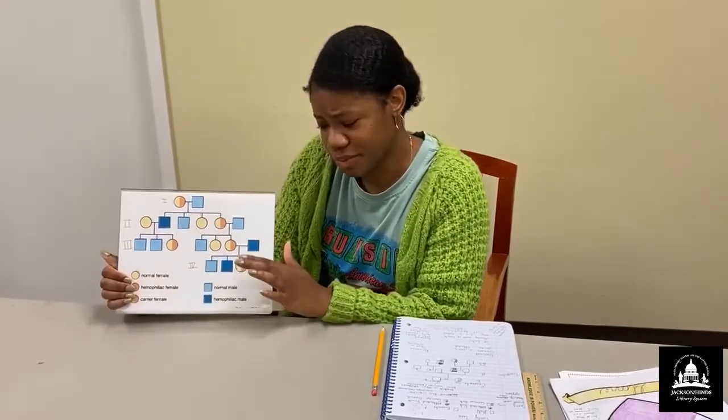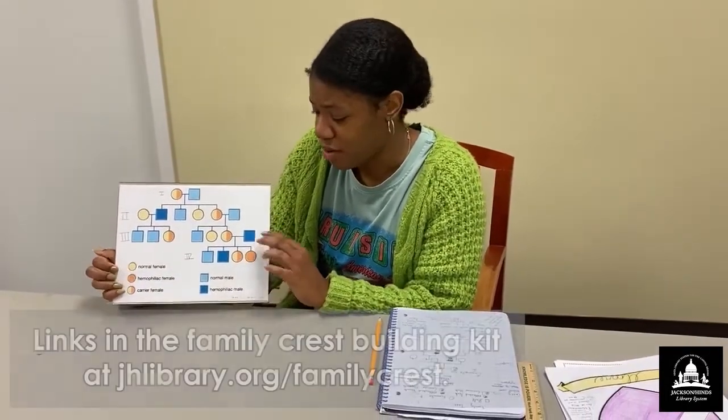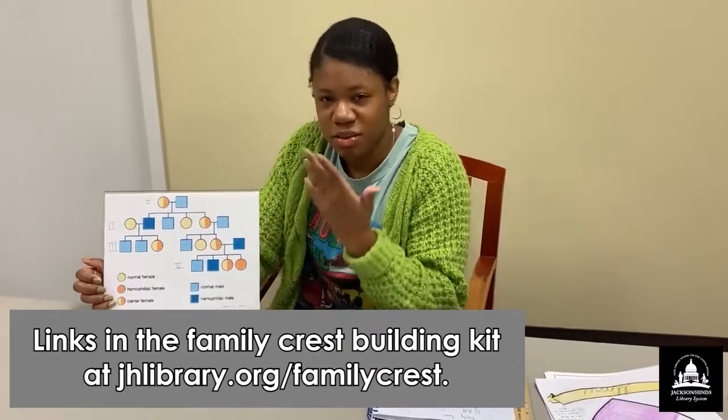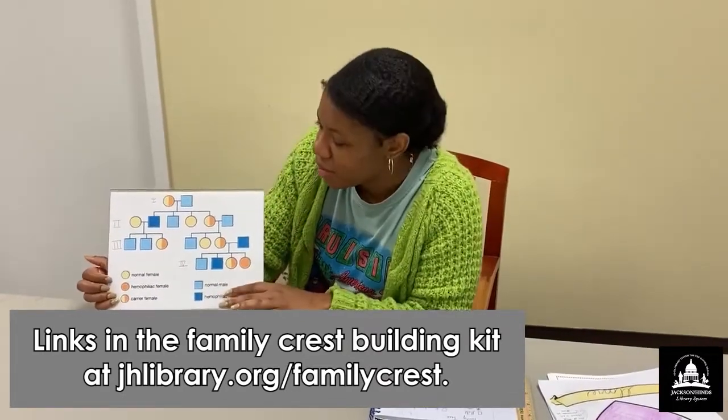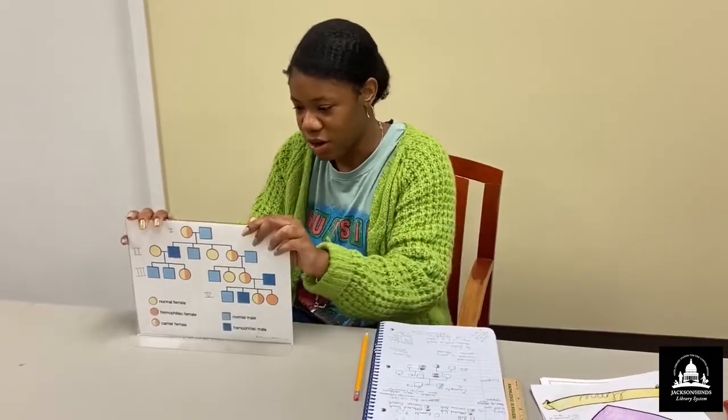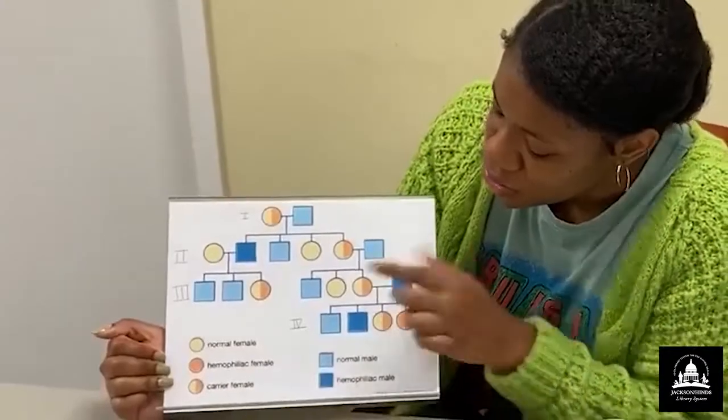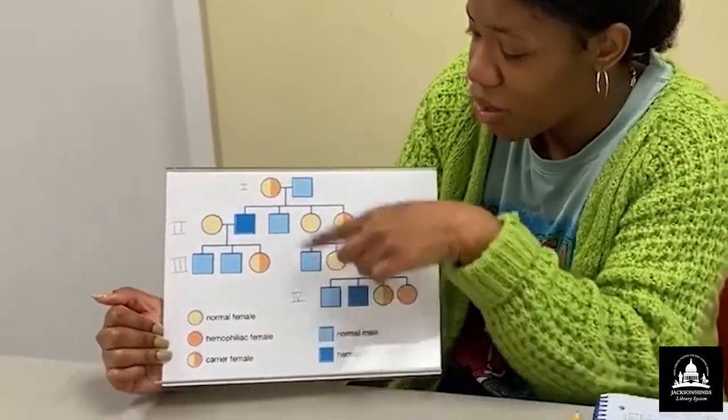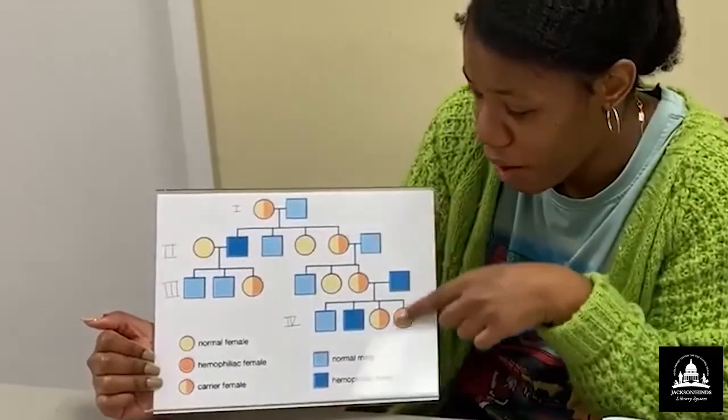And this is a pedigree chart that I retrieved from Britannica.com and I'll leave a link to it so you can, if you want to study it a little bit further in depth, you can. You'll have the option to do it. Okay, so this is a pedigree chart and what we'll do is we'll go over the little key or the little legend showing what each symbol represents in the chart.